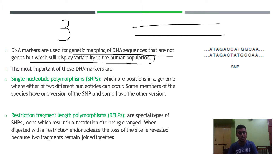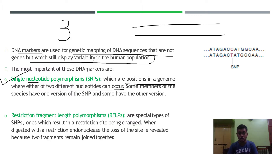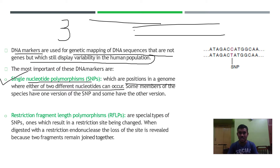The first marker is SNPs, which stands for Single Nucleotide Polymorphism. These are available at positions in a genome where either of two different nucleotides can occur. DNA markers, also referred to as genetic markers, have certain physical fixed locations in a DNA sequence.